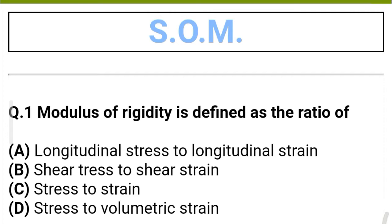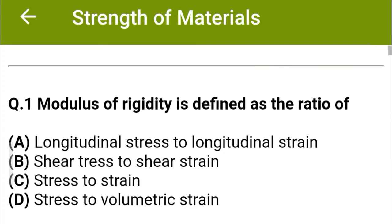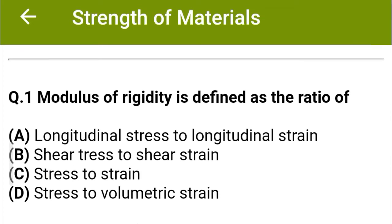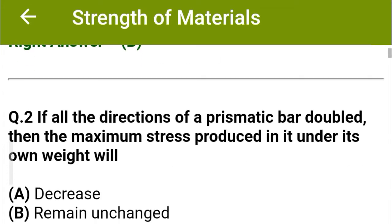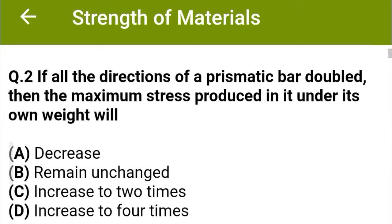The first question: Modulus of rigidity is defined as the ratio of — option A: longitudinal stress to longitudinal strain, option B: shear stress to shear strain, option C: stress to strain, option D: stress to volumetric strain. The correct answer is option B: shear stress to shear strain.